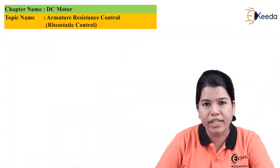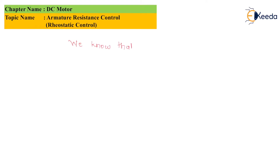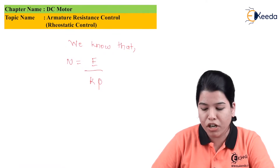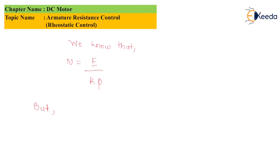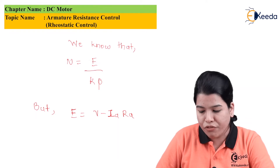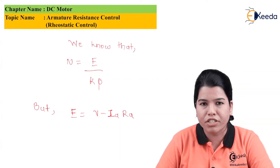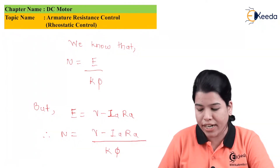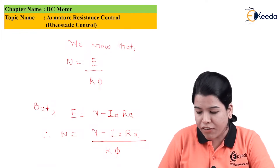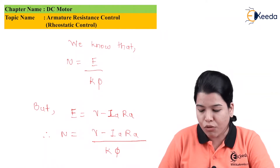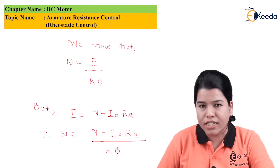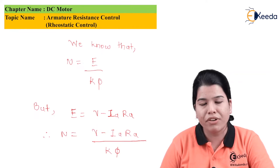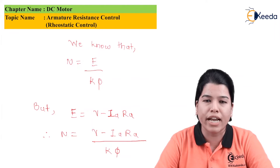We know that the equation for speed is given by n = e / (k × φ). We know the formula for e, which is given by e = V − Ia × Ra. Substituting this value of e, we get the equation for speed as n = (V − Ia·Ra) / (k × φ). If the voltage drop Ia·Ra is increased, the voltage decreases and eventually speed decreases. For decreasing this voltage, the armature resistance is increased. Hence in this method we control speed by increasing armature resistance, and the method is called armature resistance control.